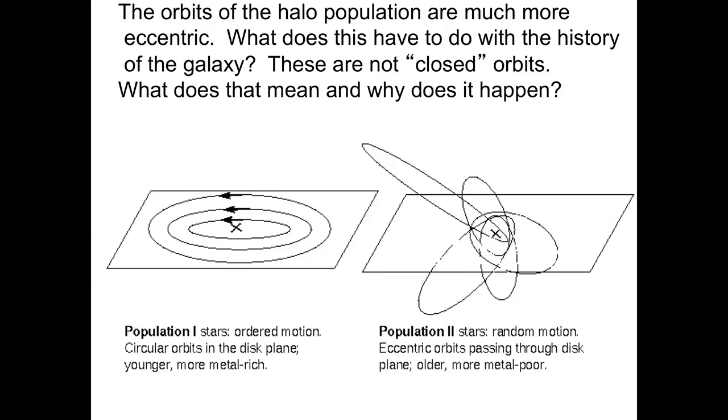So you see that here, the population 1 stars have nice circular orbits, shown on the left, and they're all moving together nearby, and it turns out they are, in fact, more metal rich. The population 2 stars on these eccentric orbits have very high velocities nearby, and they are very metal poor.